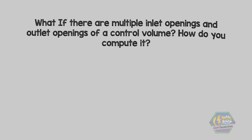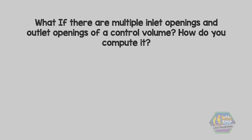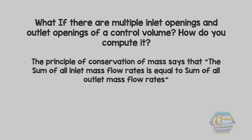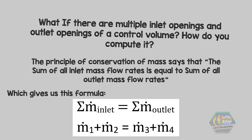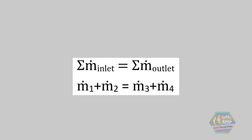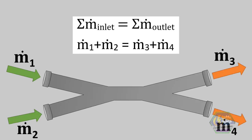Before we end this video, we will answer: what if there are multiple inlet openings and outlet openings of a control volume? For this case, the principle of conservation of mass states that the sum of all inlet mass flow rates is equal to the sum of all outlet mass flow rates, giving us the formula: summation of mass flow rates at inlet equals summation of mass flow rates at outlet.